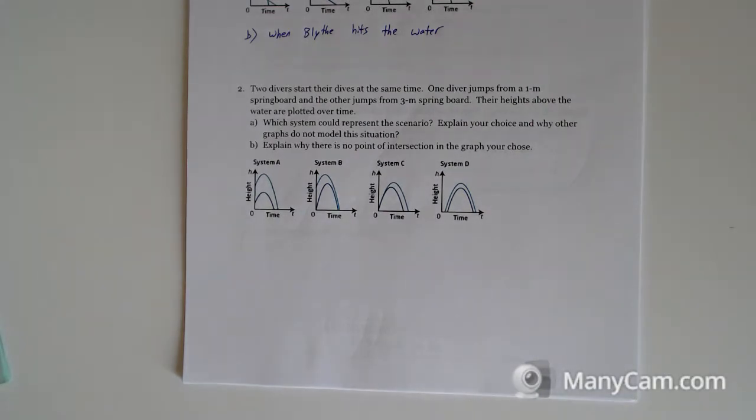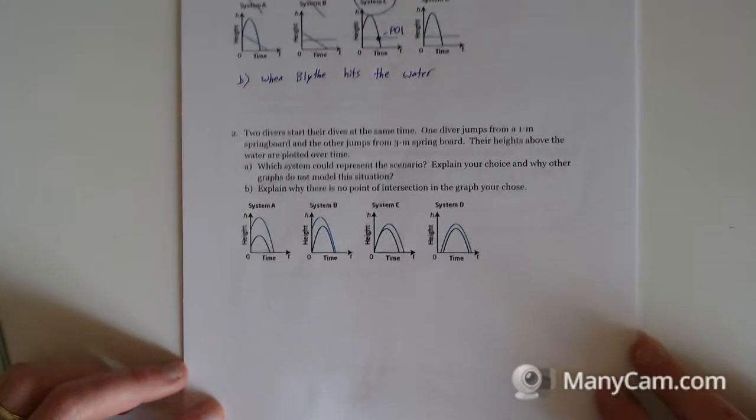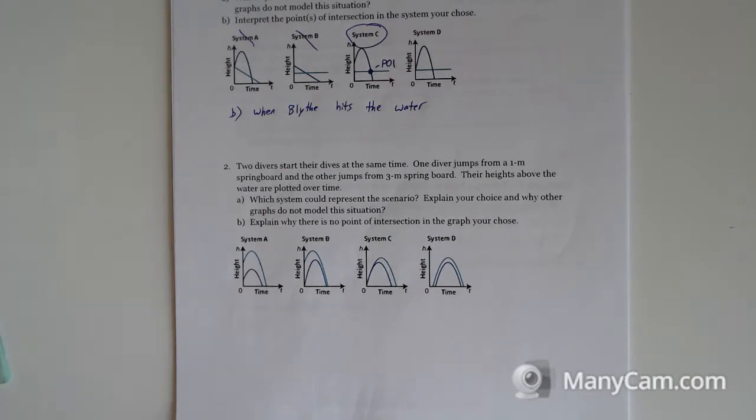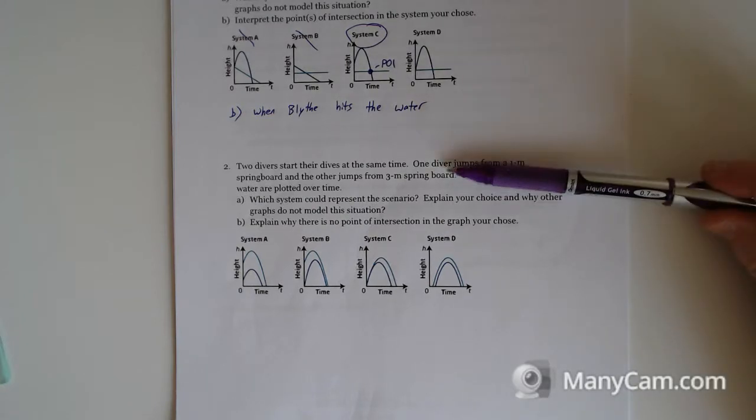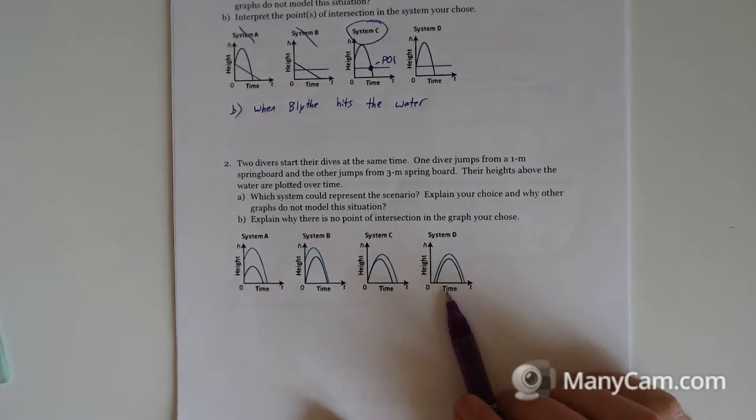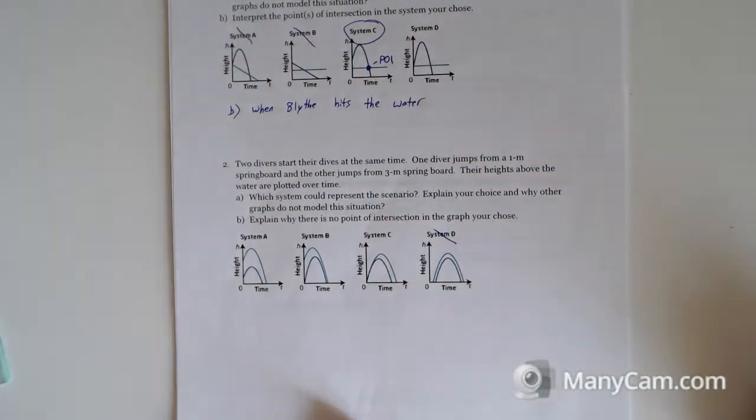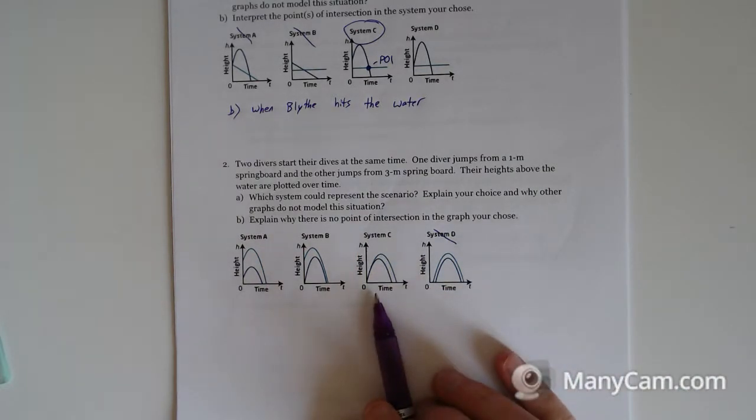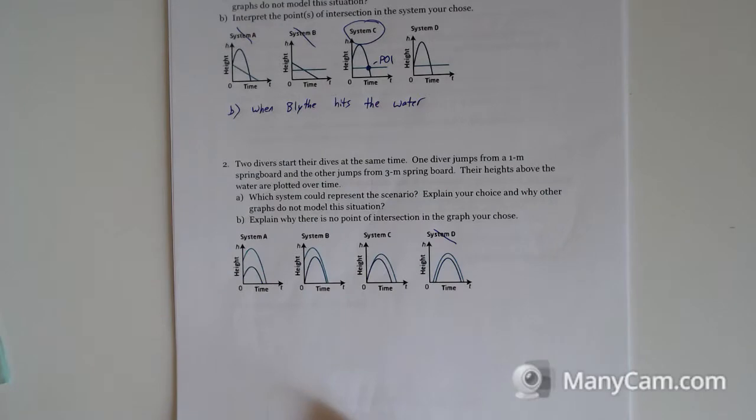Try another one like that. Two divers start their dives at the same time. One diver jumps from a one meter springboard, the other from a three meter springboard. Which system could represent this scenario? One starts one meter above the water, the other starts three meters above. We're probably going to model their dives at the same time. We're not going to be doing it with system D - this is them both starting from the same height and then jumping up at different times. Similarly, system C, they start at the same time but the same height, and we know they do not start at the same height.